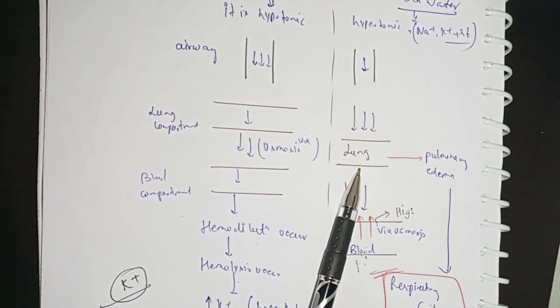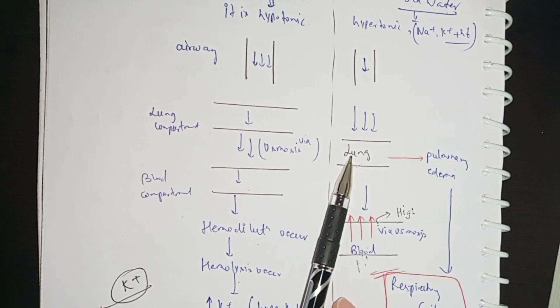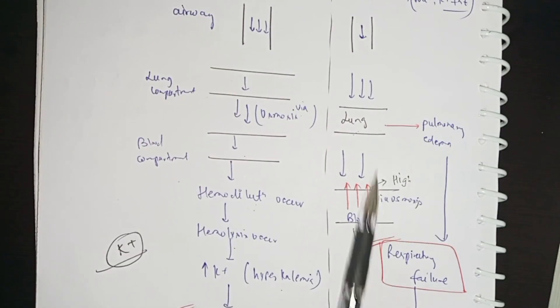But in the lungs your water is low because there is hypertonic condition. The fluid will pass from blood to lungs through osmosis.